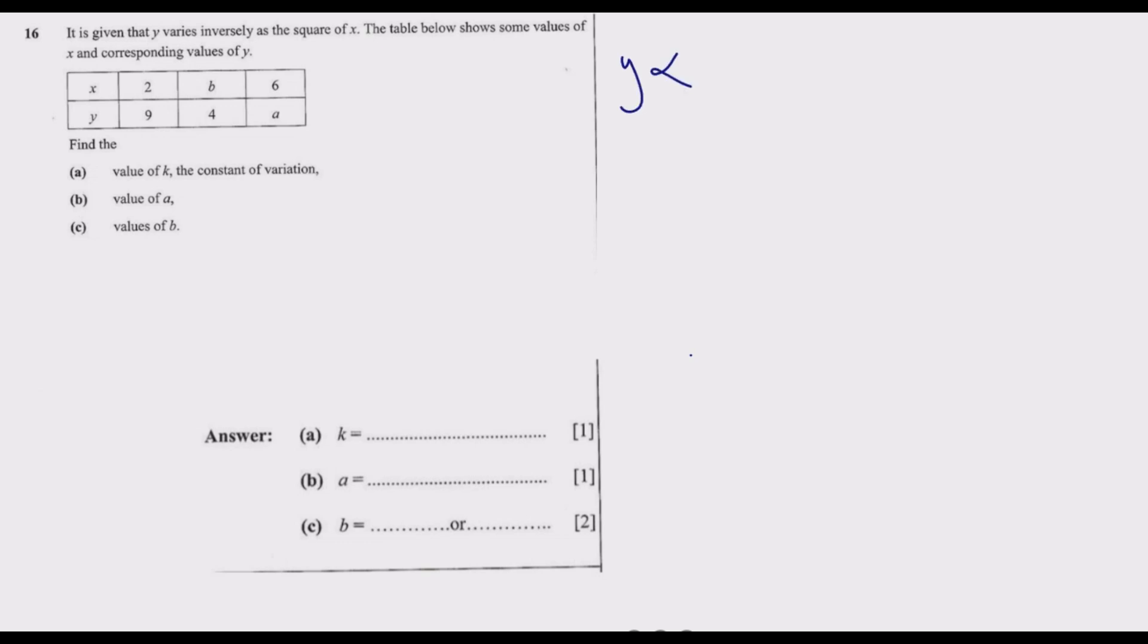From here we see the relationship between Y and X, which is inversely as the square of X. We need to introduce the constant connecting Y and X squared. This becomes Y is equal to a constant K over X squared. The first thing we notice is when X is equal to 2, Y is equal to 9, and when X is equal to 6, Y is equal to a.